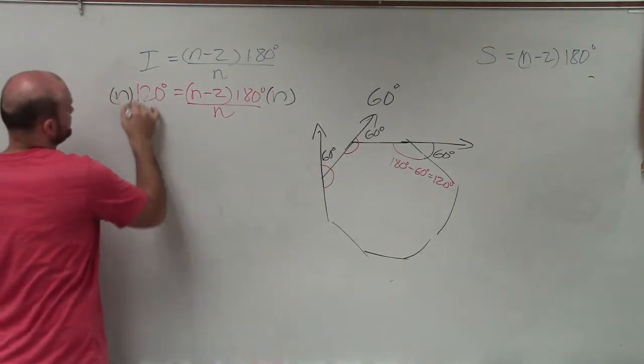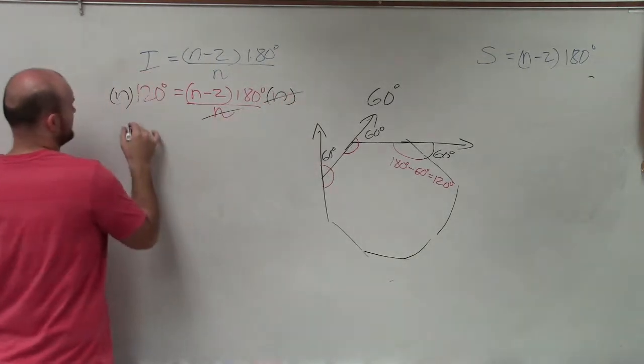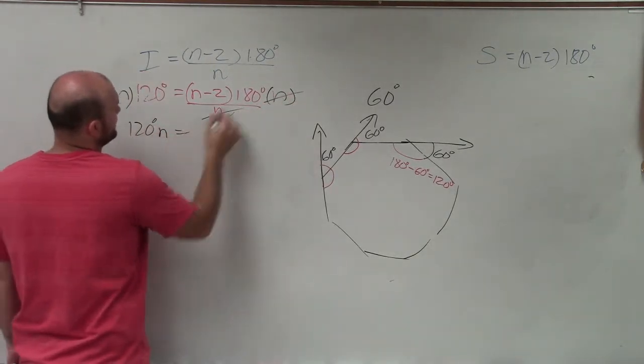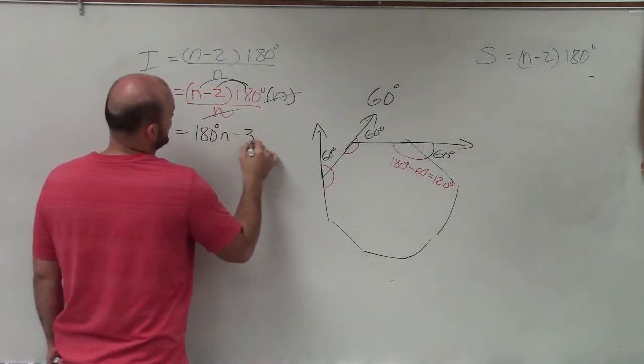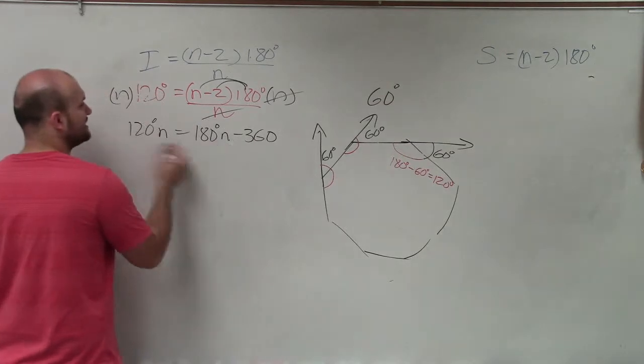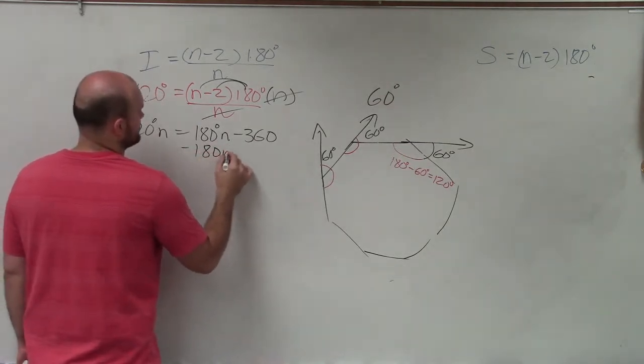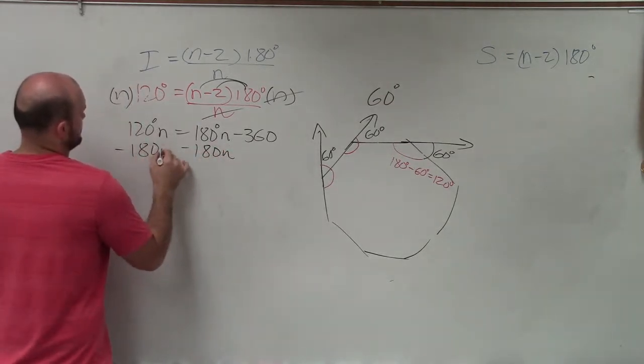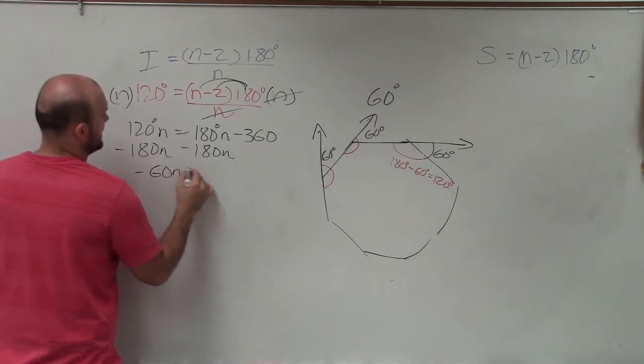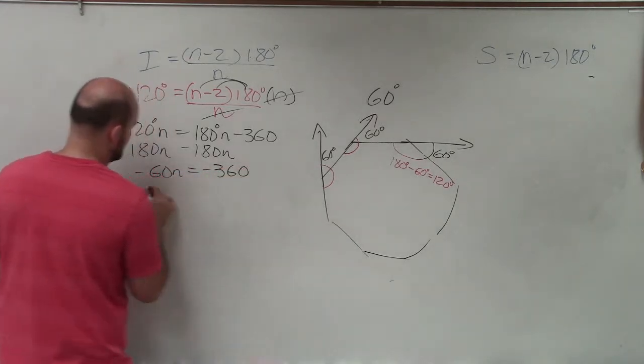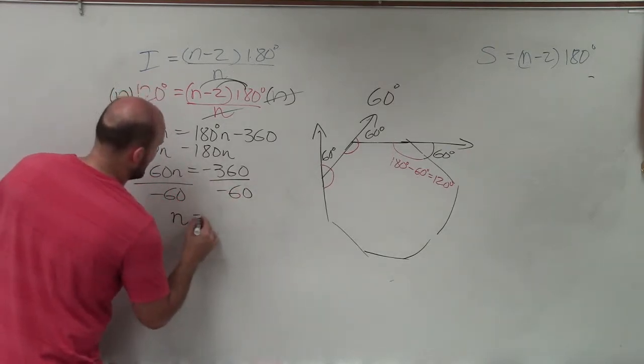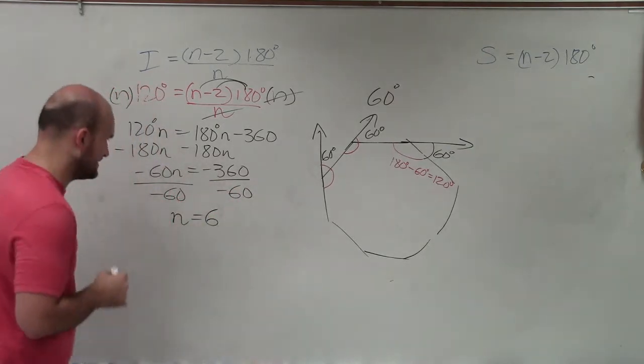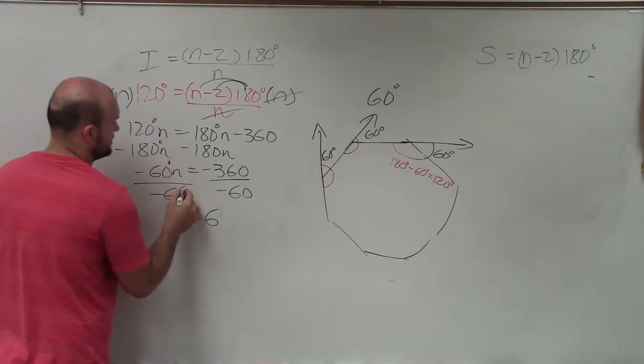And therefore, I have 120 degrees n equals, applying the distributive property, 180 degrees n minus 360. Now I get the n's to the same side. So I subtract, negative 60 n equals negative 360. Divide by negative 60, divide by negative 60. So n equals a positive 6. These are all degrees.